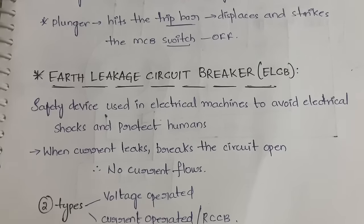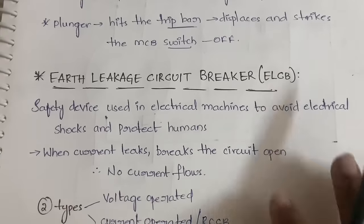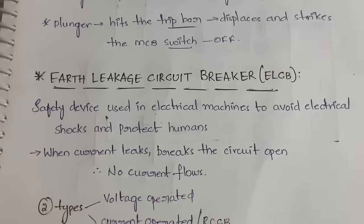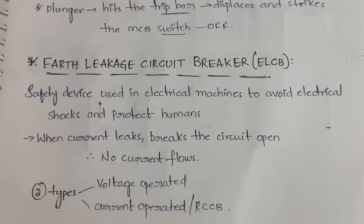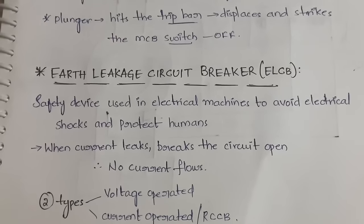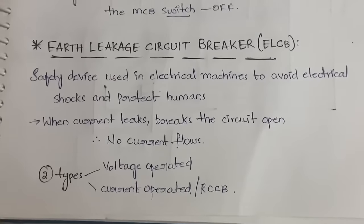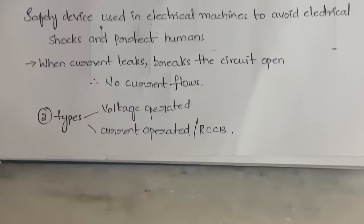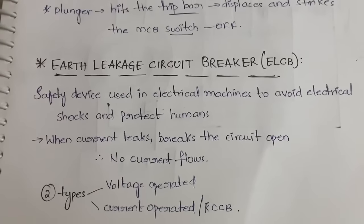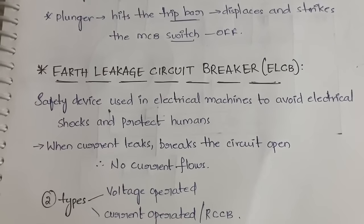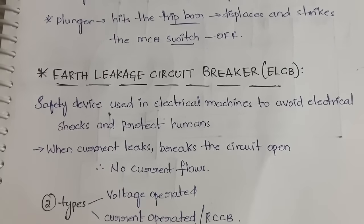We have two types of ELCB. The first one is voltage operated and the other one is current operated. Current operated ELCB is also called as RCCB — Residual Current Circuit Breaker.